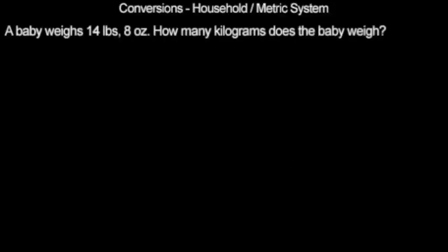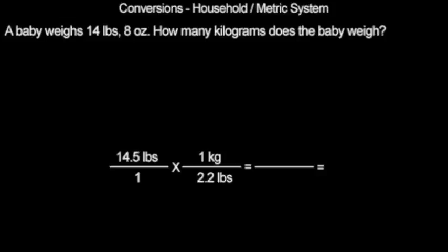A baby weighs 14 pounds, 8 ounces. How many kilograms does the baby weigh? If you remember from household conversions, 8 ounces is equal to half a pound, so we start with 14.5 pounds. We can convert into kilograms because 1 kilogram equals 2.2 pounds. Cancel like terms and multiply across. We are left with 14.5 kilograms over 2.2. Divide and get 6.6 kilograms, which is equal to 14 pounds, 8 ounces.